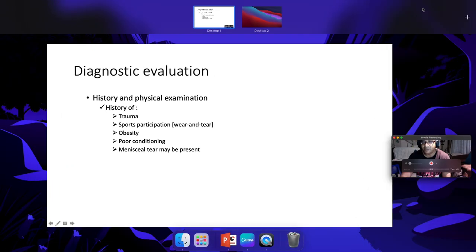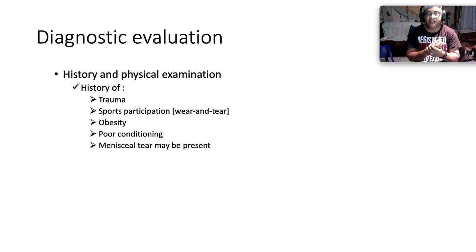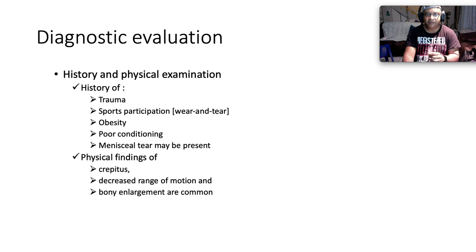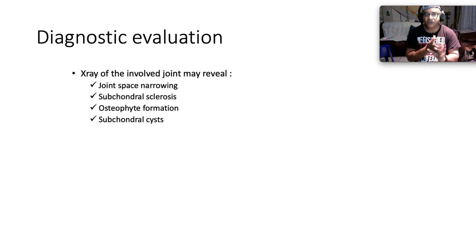Talking about diagnostics, the tenets of medicine are history and physical exam. In OA, you obtain a history of trauma — alluding to secondary OA — sports participation, obesity, poor conditioning, and possible meniscal tear. Physical findings of crepitus, diminished range of motion, and bony enlargement are common. X-ray of the involved joint may reveal joint space narrowing, subchondral sclerosis, osteophyte formation, and subchondral cysts.